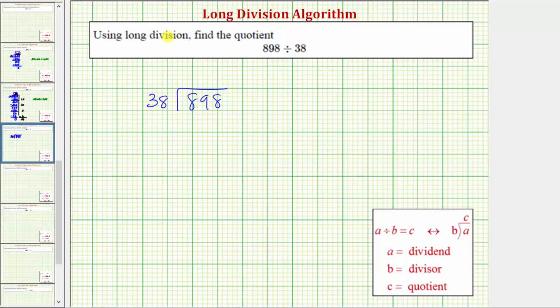To begin performing long division, we normally only consider the leftmost digit of the dividend, which would be this 8, but because 8 is less than the divisor of 38, we also consider the next digit. So we begin by considering 89.